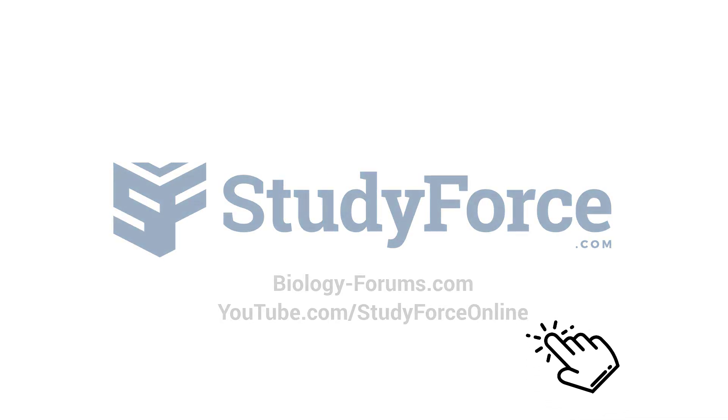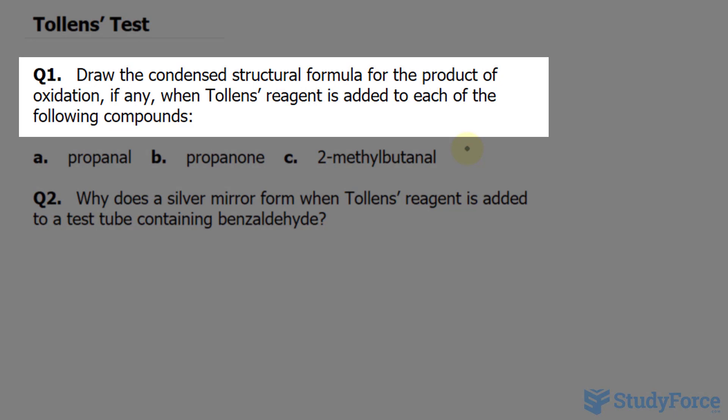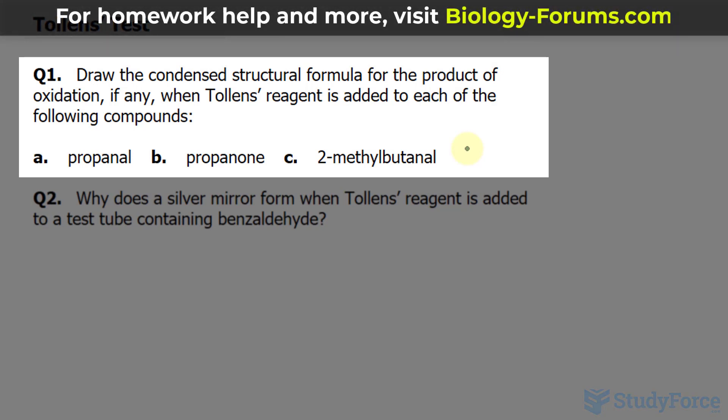In this lesson, we'll be discussing what happens when Tollens' reagent is added to a compound. The question reads: draw the condensed structural formula for the product of oxidation, if any, when Tollens' reagent is added to each of the following compounds.